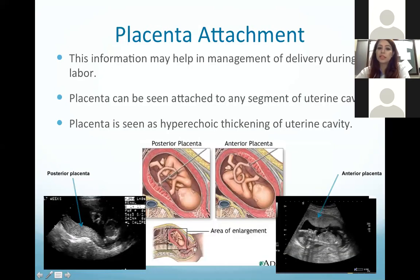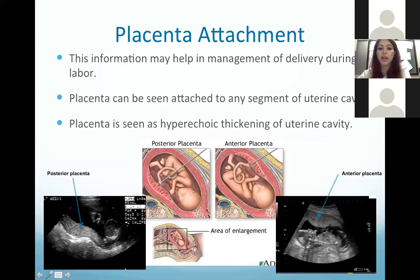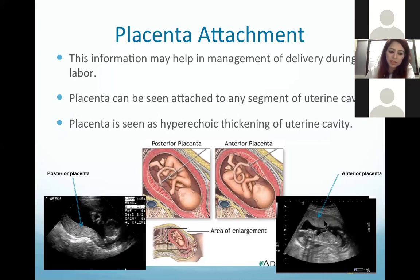Now regarding placental attachment: placenta can be attached to any segment of the uterine cavity and appears as hyperechoic thickening of the uterine wall. This information is important for delivery management, as a low-lying placenta requires cesarean section. Here you can see an ultrasound image showing a posterior placenta, and this is an anterior placenta — the placenta just below the abdominal wall is anterior, while the one away from the abdominal wall is posterior.